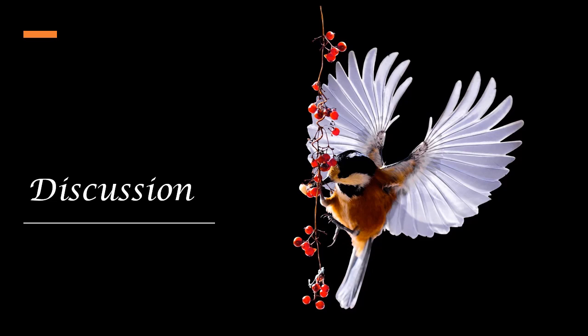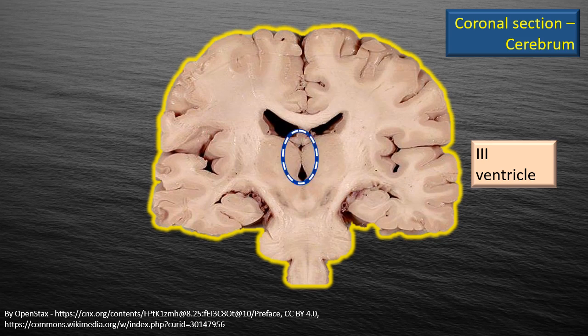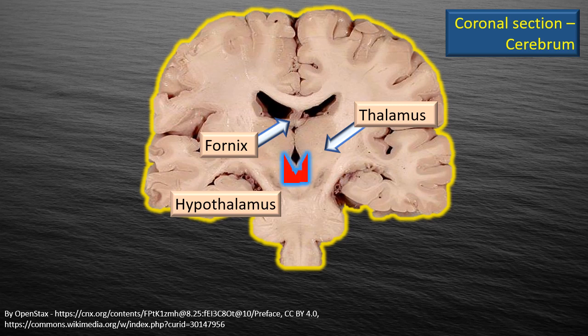Now let's go to the discussion. We begin with this familiar coronal section of the cerebrum. The encircled oval area marked in blue-white is the third ventricle, the topic of our discussion today. Note that through the interventricular foramen it communicates with the two lateral ventricles — a very important point. The flashing area in red and blue forms the floor and the lateral wall of the third ventricle. That is the hypothalamus.